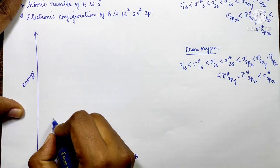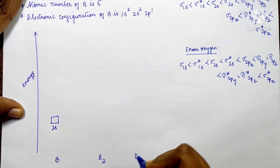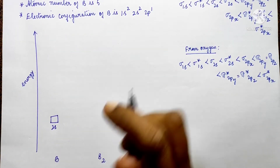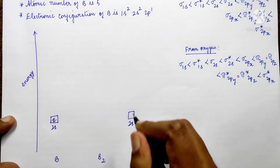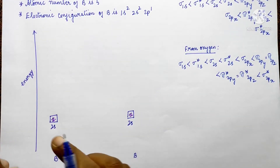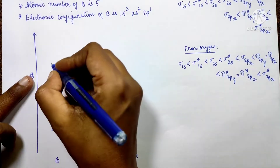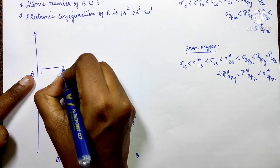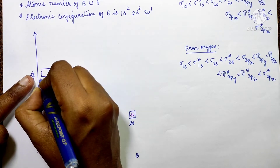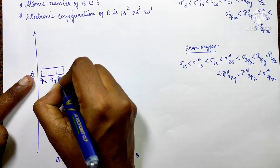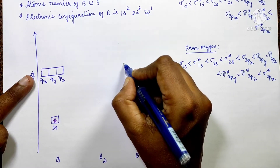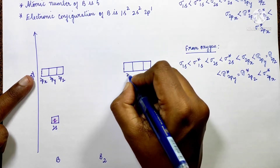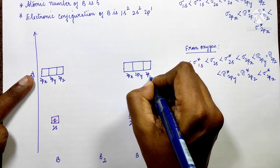For each boron atom, we label the 2s orbital and the 2p orbitals — 2px, 2py, and 2pz. Each boron has 2s² and 2p¹, so one electron in 2p. Both boron atoms are drawn with their respective atomic orbitals on either side.